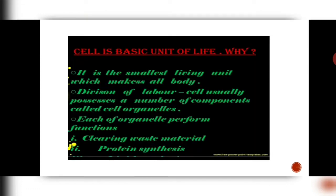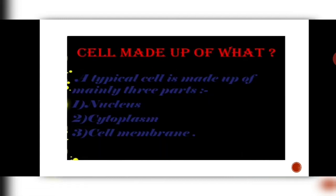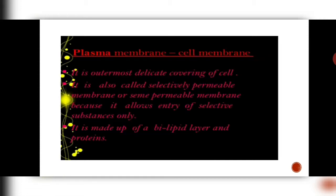Cell is the basic unit of life. We have already discussed how it performs all the functions and all the larger units are made up of cells. A typical cell is made up of mainly three parts: the nucleus which contains the genetic material, the cytoplasm which has all the organelles, and the outermost covering known as the cell membrane. The cell membrane is also known as the plasma membrane. It is the outermost covering which is a living membrane — it is very delicate and it is selectively permeable or semi-permeable in nature.